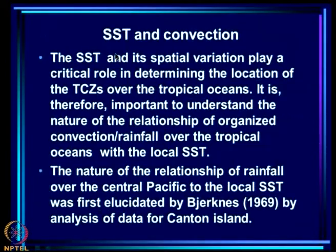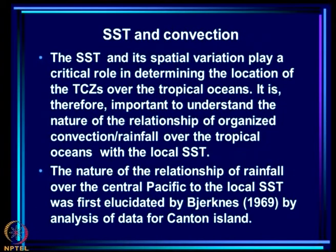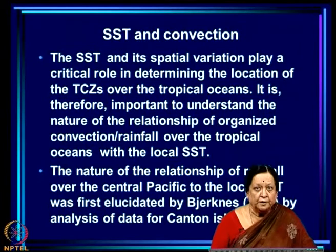To understand why there is no convection over the eastern Pacific in JFM and how it appears in April, we need to look at sea surface temperature (SST) patterns, because SST and its spatial variation play a critical role in determining the location of TCZs over the tropical oceans. The key factor determining where convection and low-OLR regions will be is SST and its spatial variation. The nature of this relationship was first elucidated by Bjerknes in 1969 through analysis of data from Canton Island in the central Pacific.